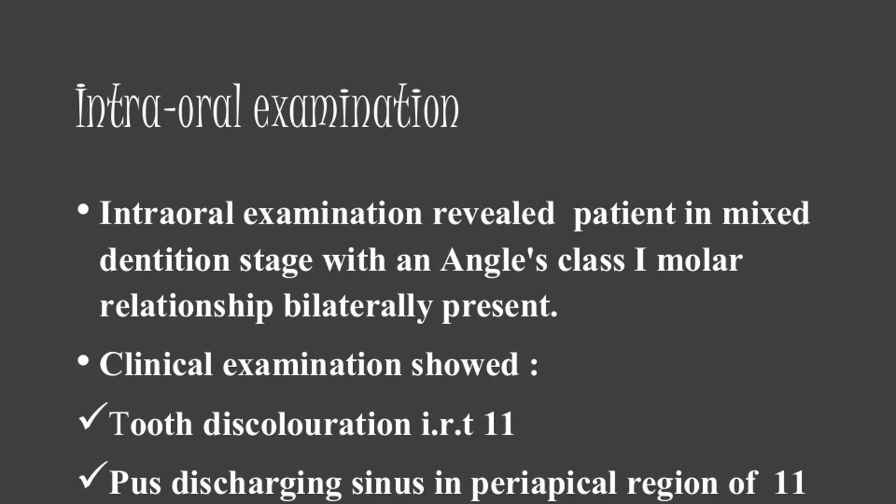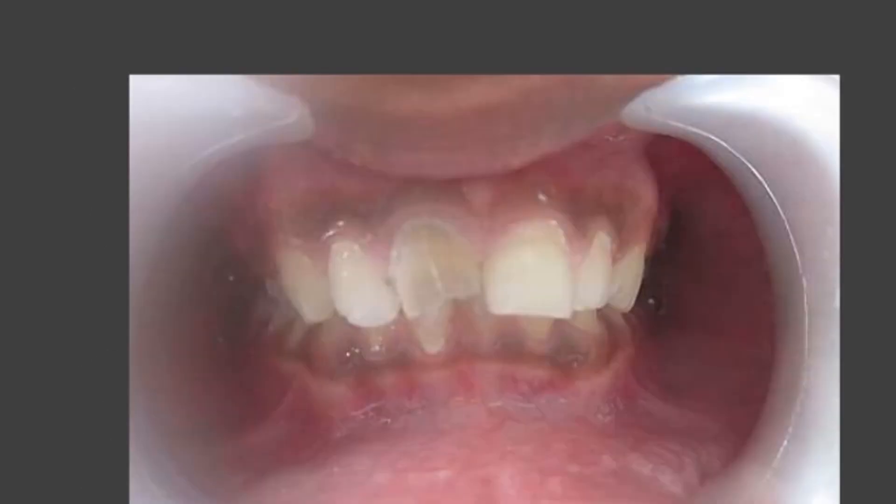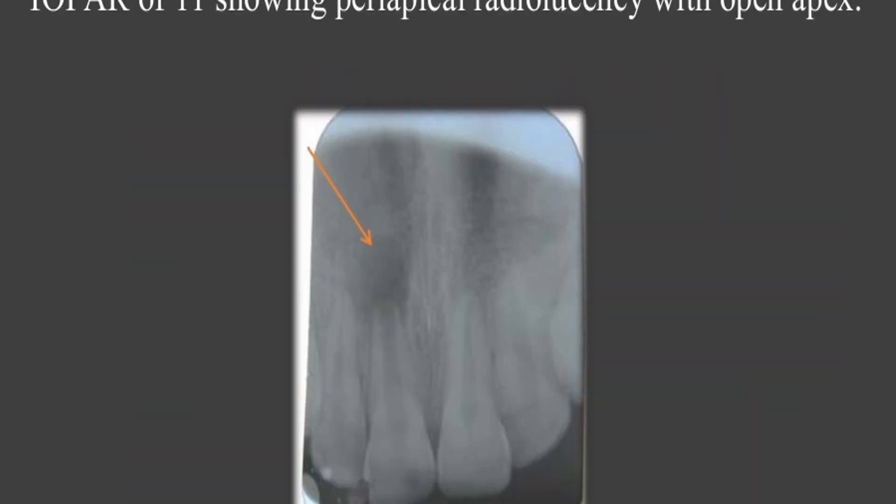Intraoral examination revealed the patient in mixed dentition stage with an Angle's Class I molar relationship bilaterally present. Clinical examination showed tooth discoloration in tooth 11, plus a discharging sinus in the periapical region of 11. Intraoral view showing 11. IOPAR of 11 showing periapical radiolucency with open apex.